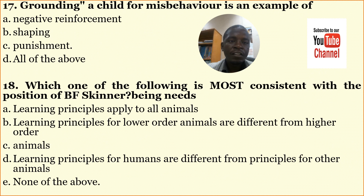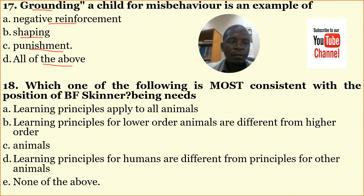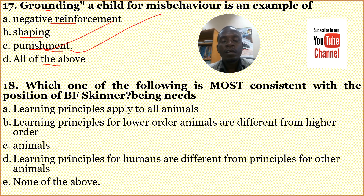Number seventeen: Grounding a child for misbehavior is an example of — A: negative reinforcement, B: shaping, C: punishment, D: all of the above. The correct answer is C: punishment. Punishment is a form of grounding.